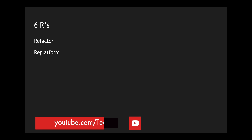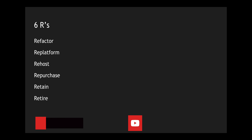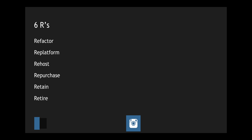The six R's include refactor, re-platform, re-host, repurchase, retain, and finally retire. You can fit your application into one of these R's and take your strategy specific to that particular R. The first step in an application migration strategy is to identify where your application migration will fit in, what kind of investment you have, and what kind of investment you are ready to make.